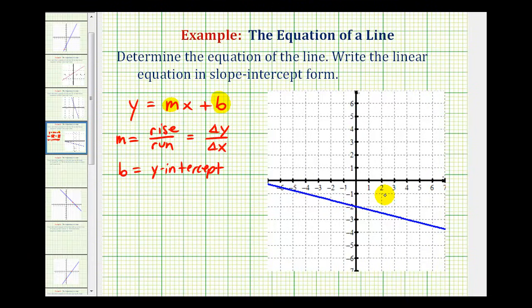For example, notice if we select this point here that has coordinates negative four, negative one, and then maybe this point here that has coordinates four, negative three.